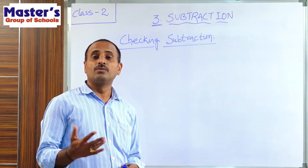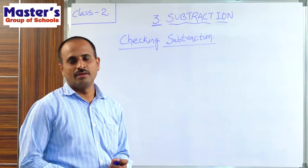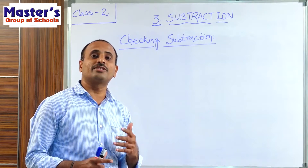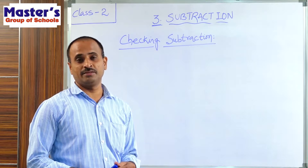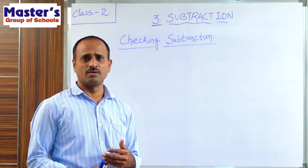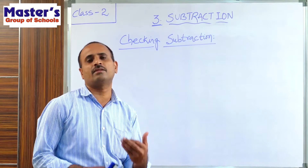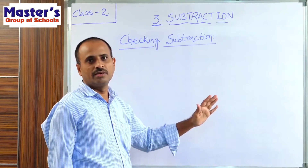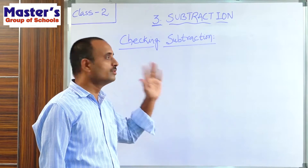We have discussed how to subtract 3-digit numbers in expanded form. Now the next topic is checking subtraction. We are doing so many subtractions in this chapter, but we can also know whether the subtraction is correct or not. We can check the subtraction by doing addition. Addition is the process which is used for checking subtraction.